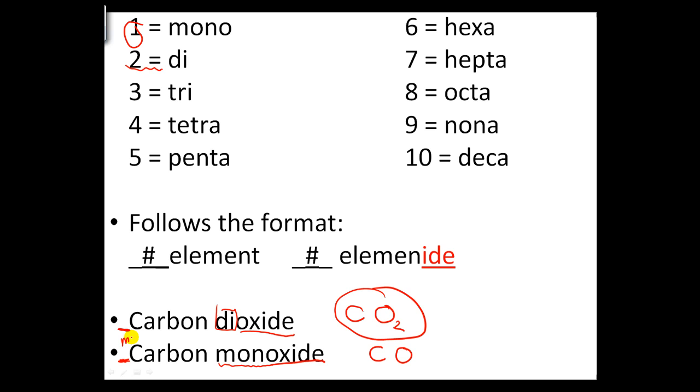Now you notice that the first carbon, the first element, never has a mono in the front even though it's a one carbon. By convention, we never put a mono in the front, even if we want to. Instead, mono is reserved only for the second element.